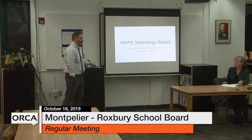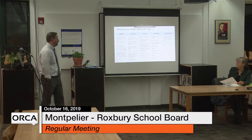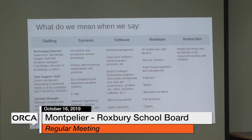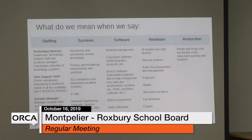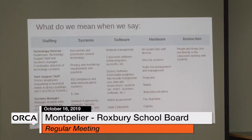I understand you have copies of the presentation and copies of the audit. I'll hit some key points. When I talk about staffing, I'm talking about personnel under technology. Systems refers to computer systems and internal systems — how things are done, decisions are made, processes. Software is any licensed program or accounts for students and staff — mostly all online now. Hardware covers computers and devices supporting infrastructure. Instruction is anything directly in the classroom.